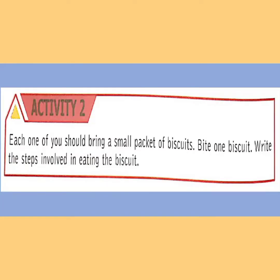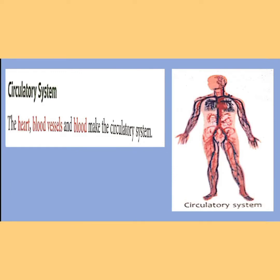Now I have explained the digestive system. For an activity, you have biscuits in your house — take a biscuit and observe eating it, then write your observations in your copy. The next system is the circulatory system. It has three parts: heart, blood vessels, and blood.